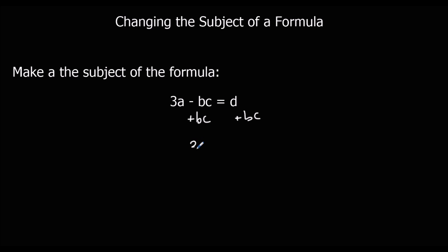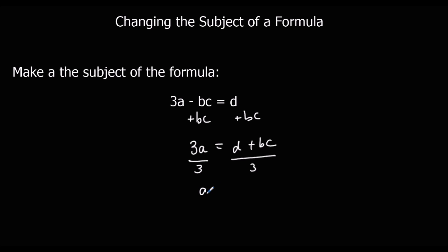That leaves me with 3A on the left, and D plus BC. So I've got 3A by itself, but I want A by itself. To get rid of the 3, it's times at the moment, so I'm going to divide by 3. If I divide the left side by 3, I've got to divide the right side by 3, because I've got to do the same to both sides. So 3A divided by 3 is A, and the answer is D plus BC over 3. It says A equals, so A is the subject of the formula and we've finished the question.